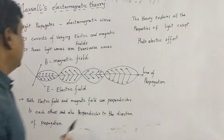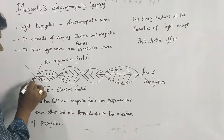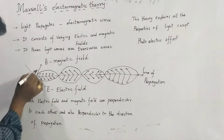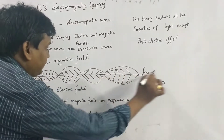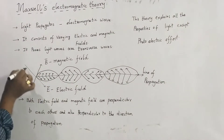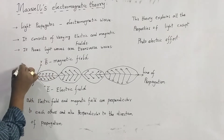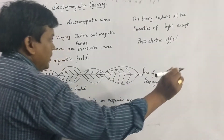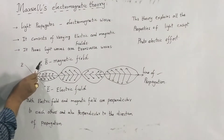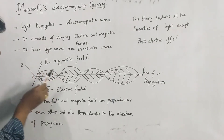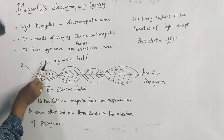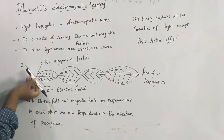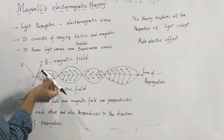Looking at the diagram, the light is traveling in the form of a wave. Here we have the x-axis, y-axis, and z-axis. The x-axis is the direction of propagation of light — this is called the line of propagation. The y-axis represents the magnetic field, showing the direction of the magnetic field, and the z-axis represents the electric field, showing the direction of the electric field.